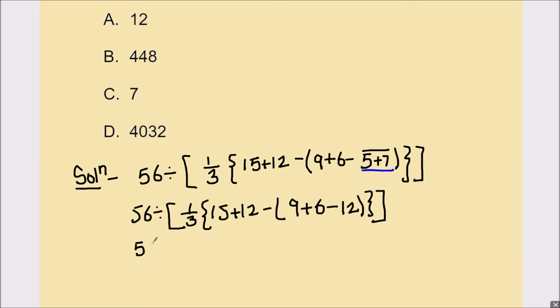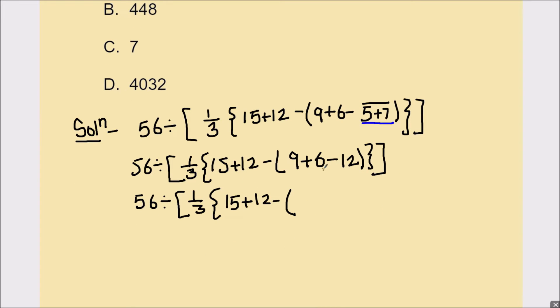Then we'll go to the next step, which is 56 divided by one-third, open curly brackets, 15 plus 12 minus. According to BODMAS, we'll first do addition, so 9 plus 6 is 15, so that's 15 minus 12. One-third, open curly brackets, 15 plus 12 minus 15 minus 12 is 3. We have solved this small bracket fully, so we'll underline it.